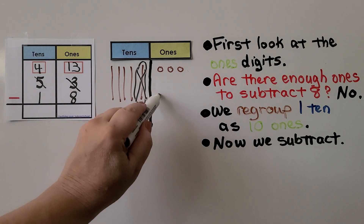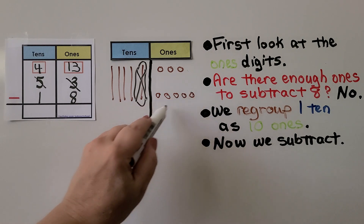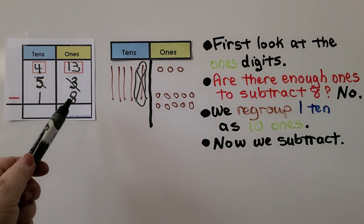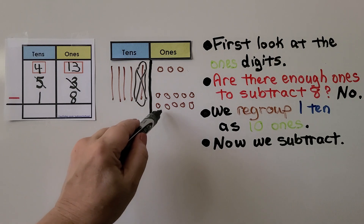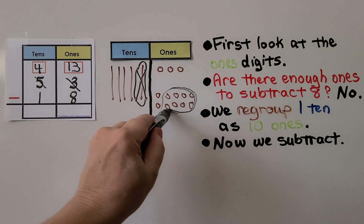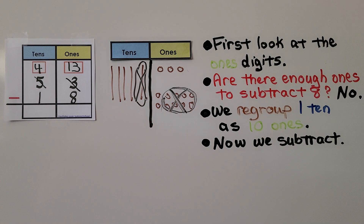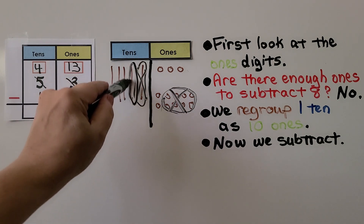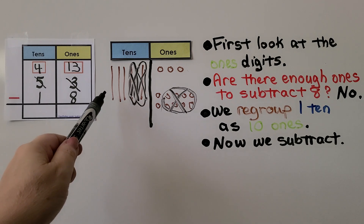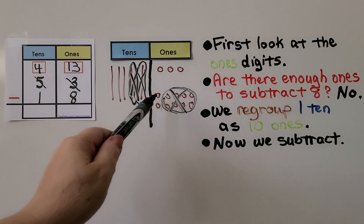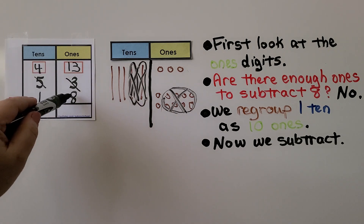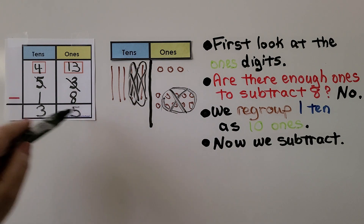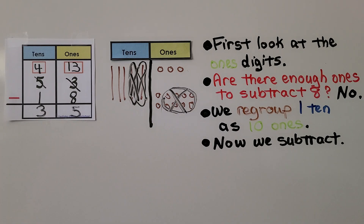We put ten ones here. Now we do have enough to take away eight ones. We circle eight ones and cross them out. We still need to take away a ten, so we take away this one here. We count five ones remaining — thirteen minus eight is five. Four minus one is three. We have three tens left, five ones. That's thirty-five.